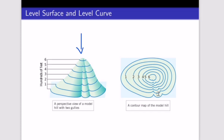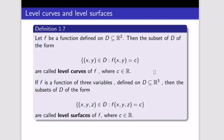Now we talk about level surfaces and level curves. Think of a contour and perspective view — when you see a hill from the ground it looks one way, but from a helicopter looking down, you see the contour projection. That contour map of the model hill, ranging from one to five, shows a circular path — that's how the surface looks.